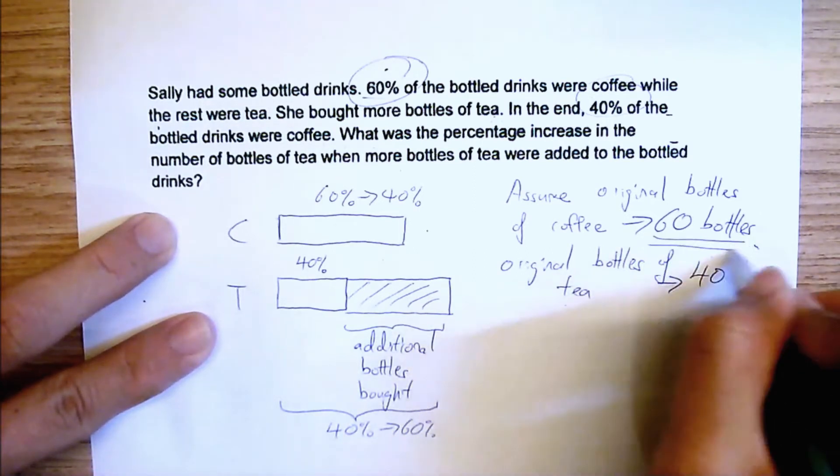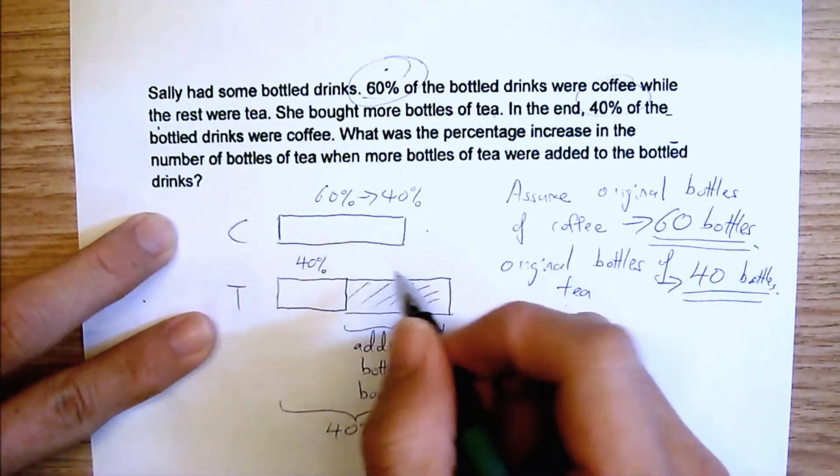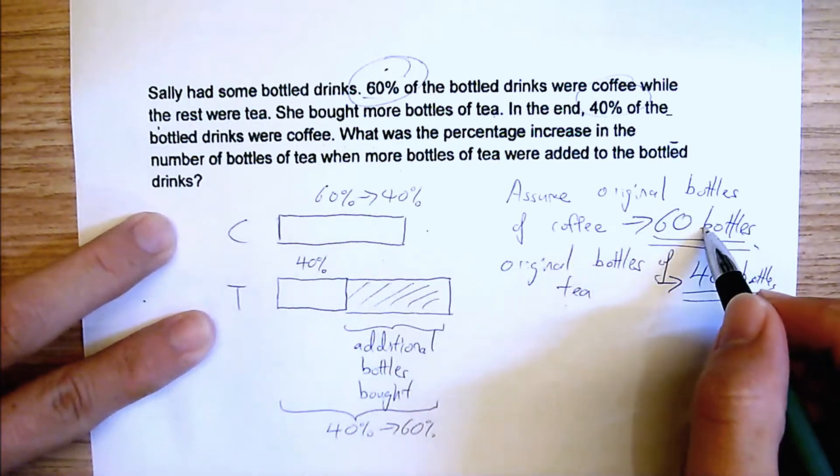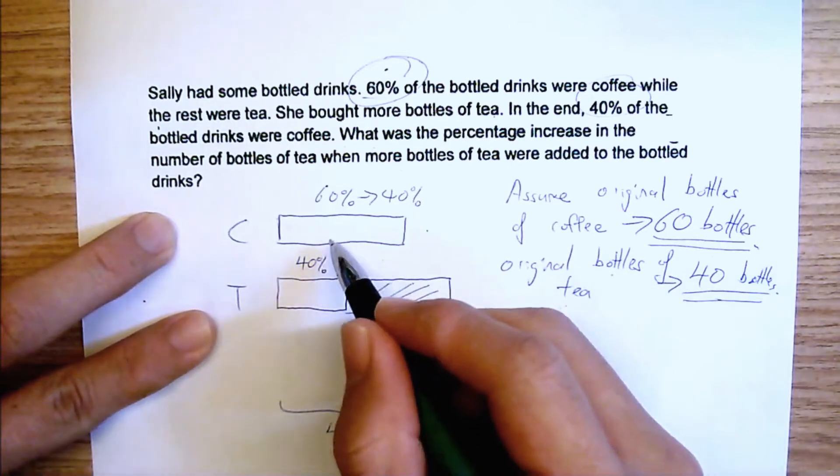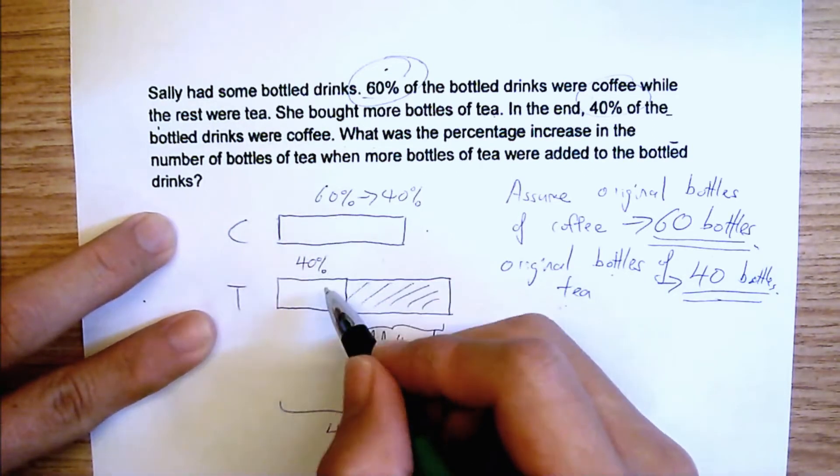Just do this assumption method, and it's still correct. Because if the bottles of coffee is 60 bottles and the bottles of tea is 40 bottles, it's correct. 60% of them is coffee, 40% are tea.